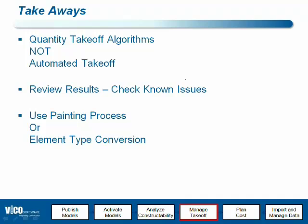The main conclusions of that quantity takeoff story: it is algorithms, which is different than just using the ready properties and ready quantities we used to get from Archicad. So it is important to make reviewing of the set of quantities a part of the process — always check if there are numbers that have a warning triangle or numbers that seem higher than expected.